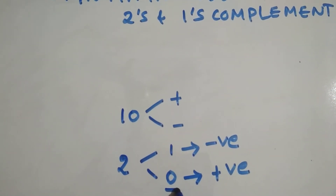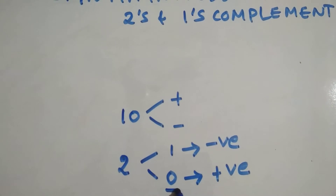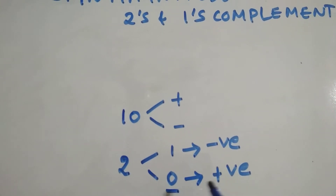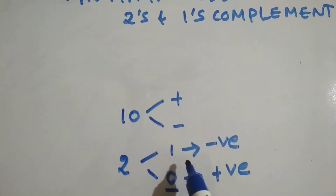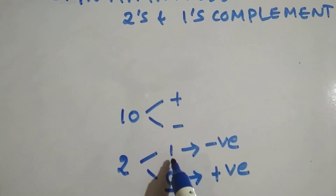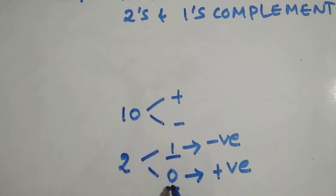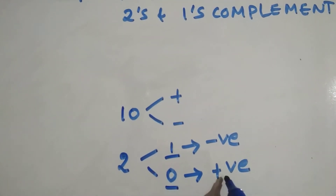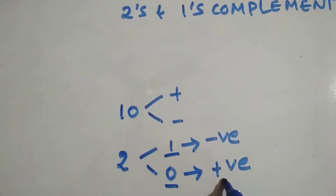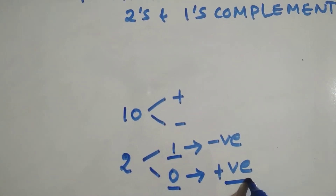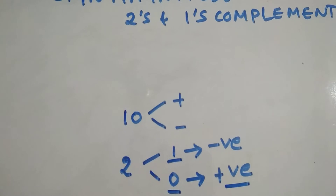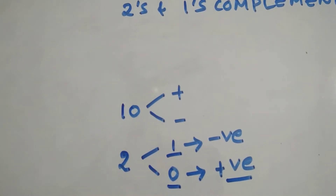This is how we represent numbers in signed magnitude form — by taking 1 as negative and 0 as positive. The MSB bit of a binary number: if it is 1, it is a negative number; if the MSB bit is 0, then it's a positive number.